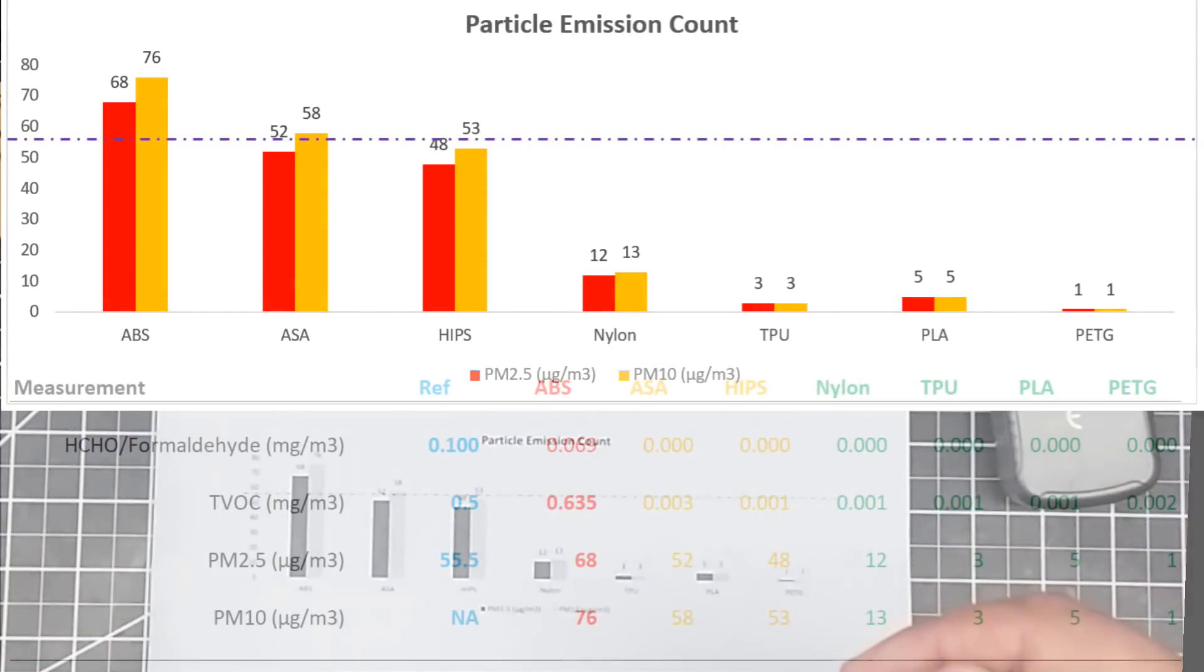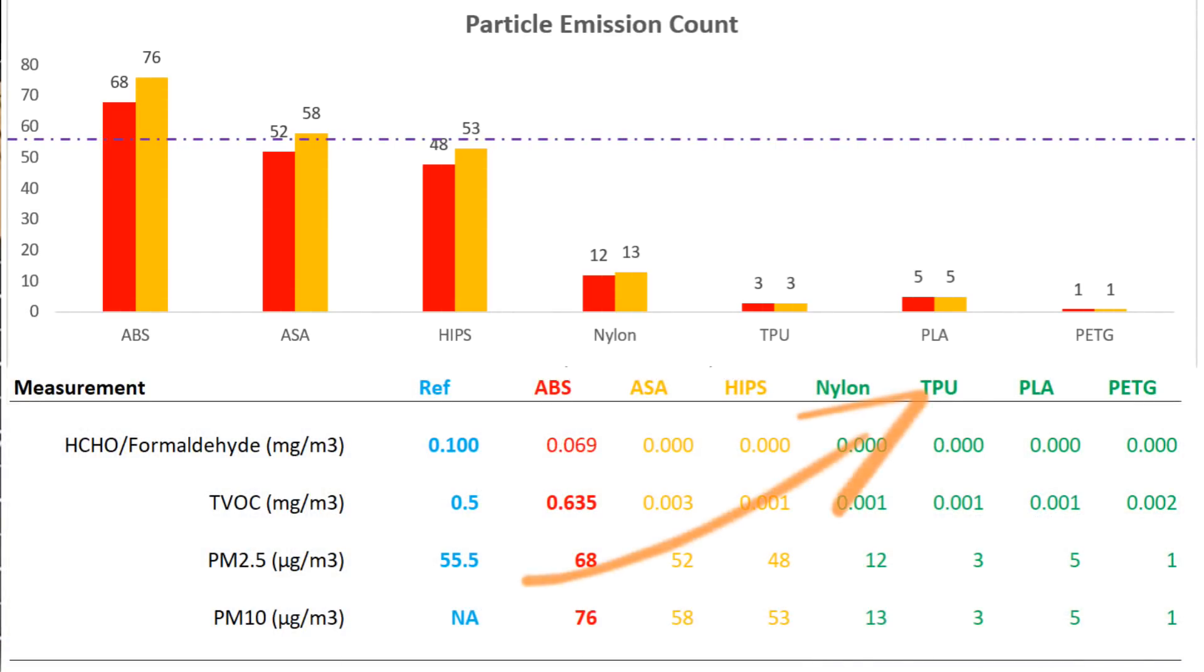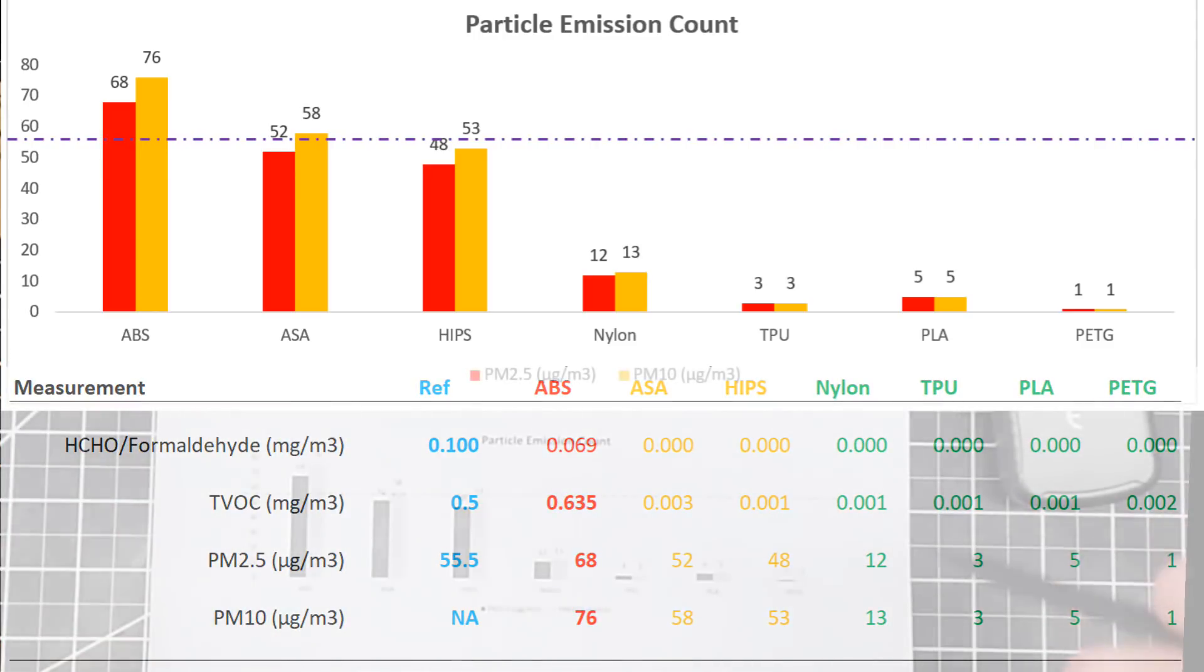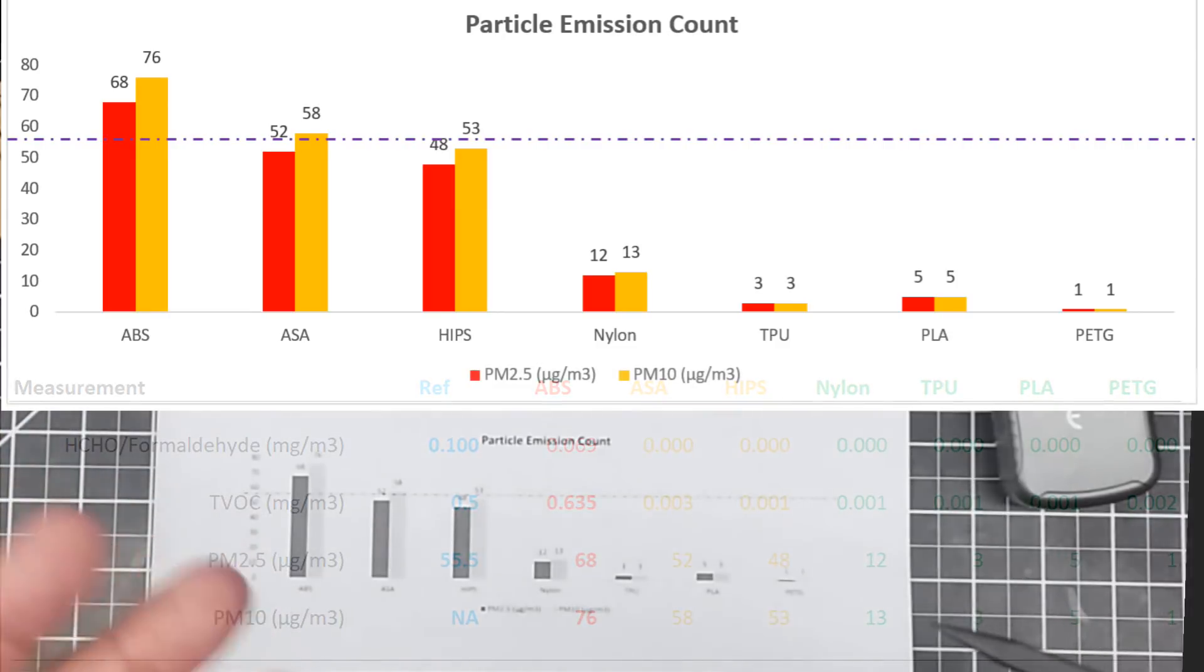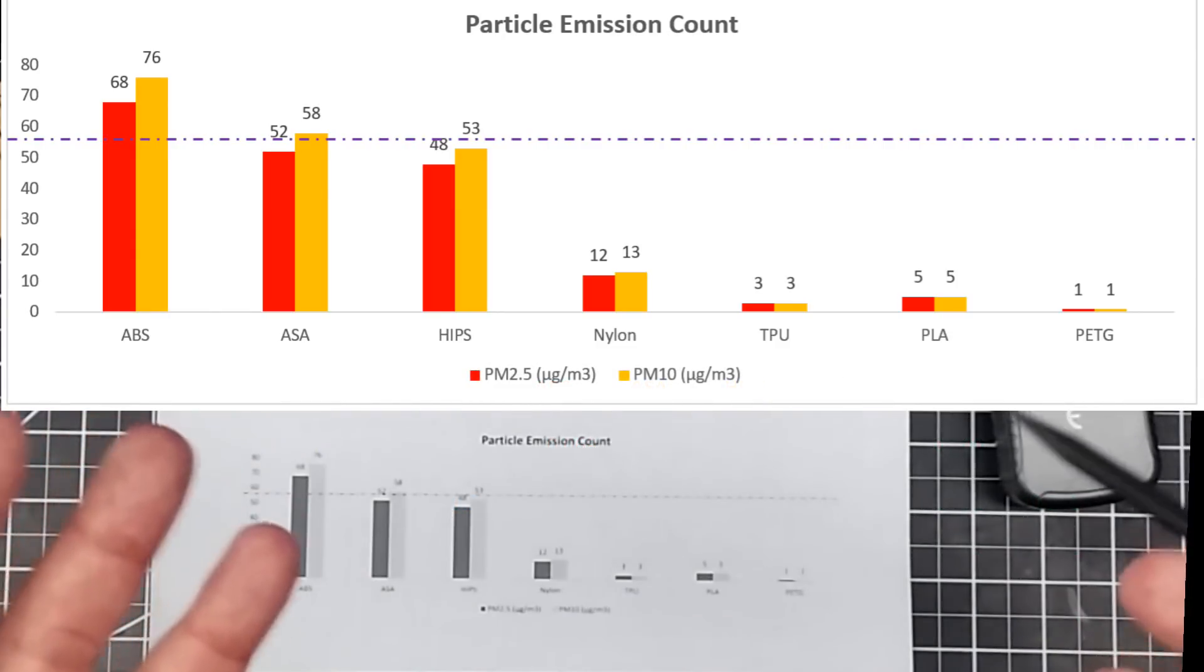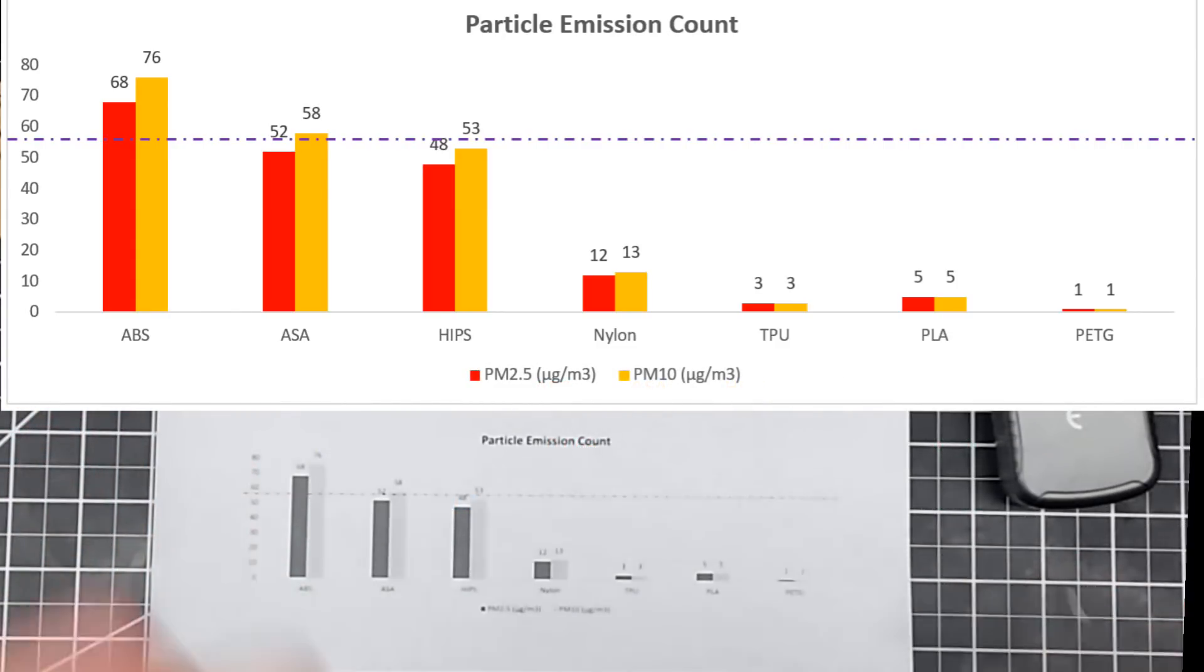Again, moving on to TPU. TPU found it very low as far as particulates. So actually, I think TPU and PLA should have been flipped on this chart. But again, TPU, it seemed to be fairly benign. We didn't see VOCs, formaldehydes, really very low odor, no odor that I noticed anyway.